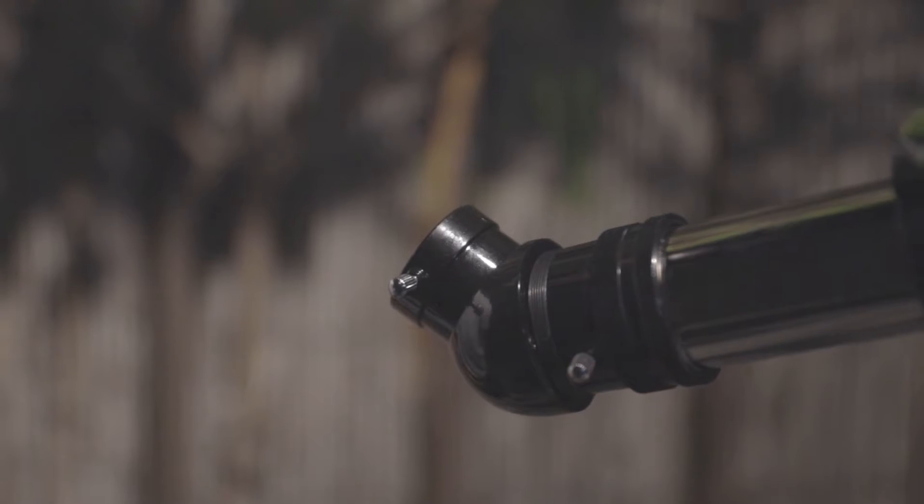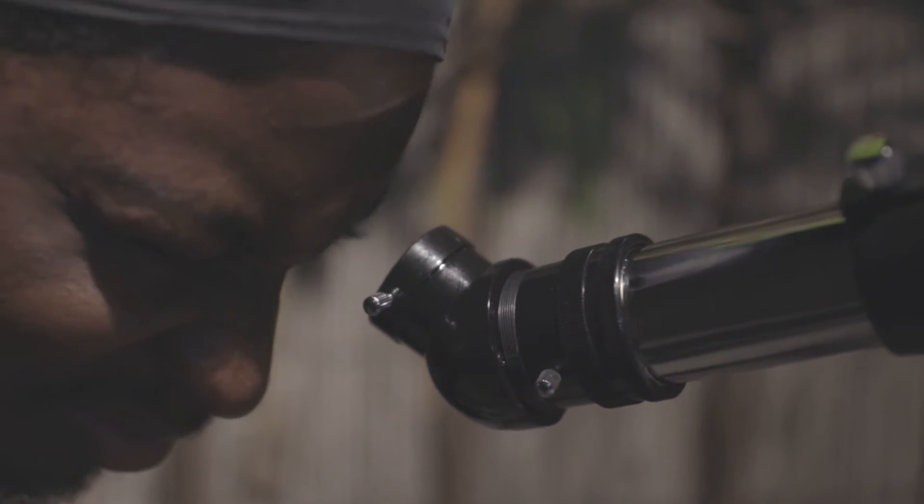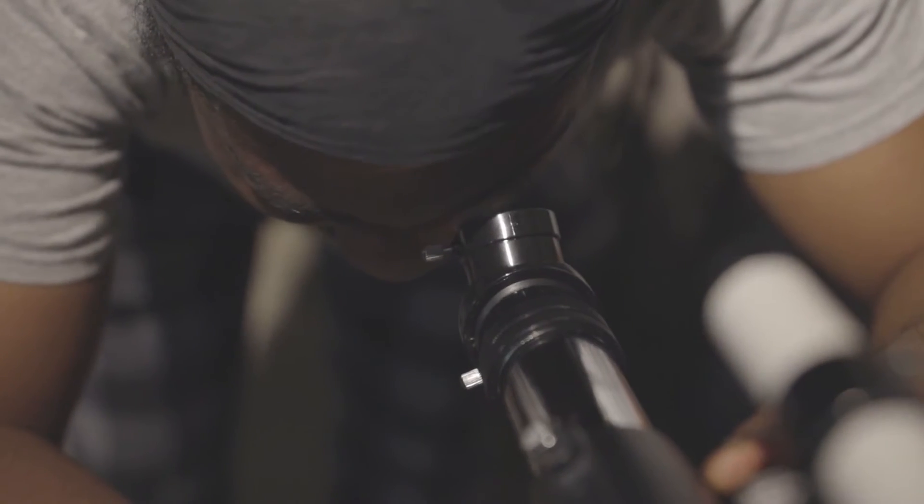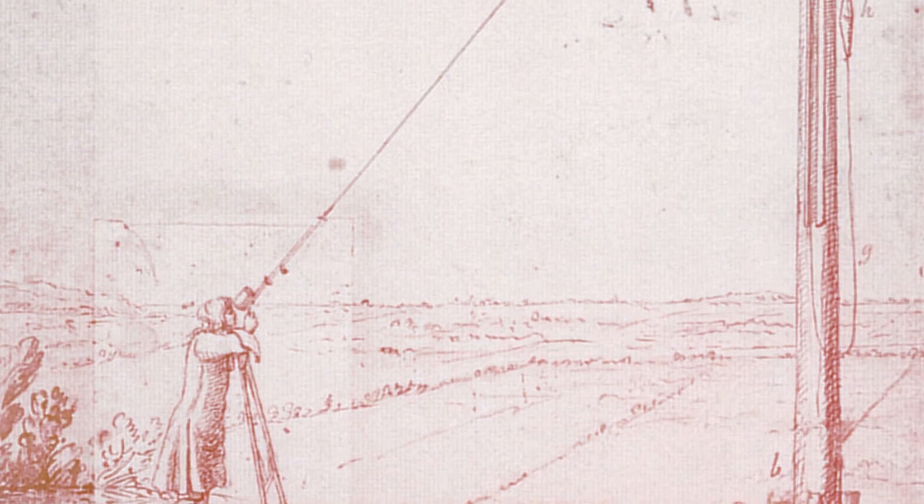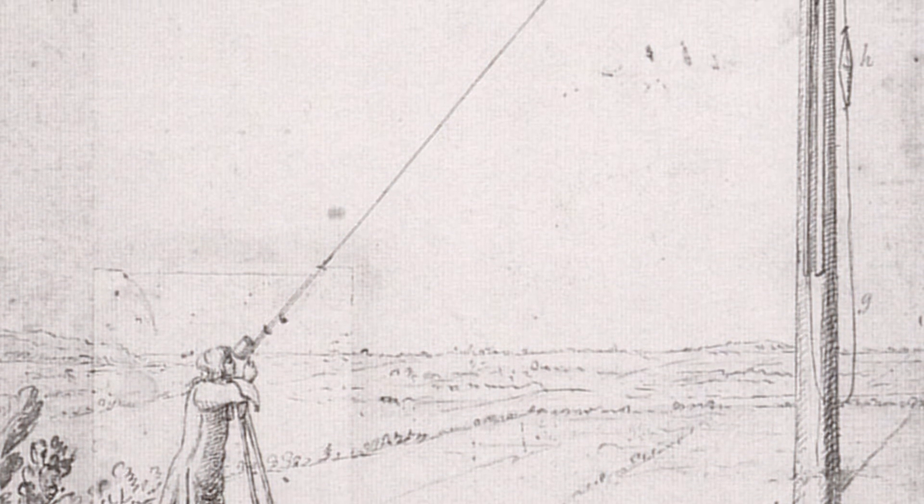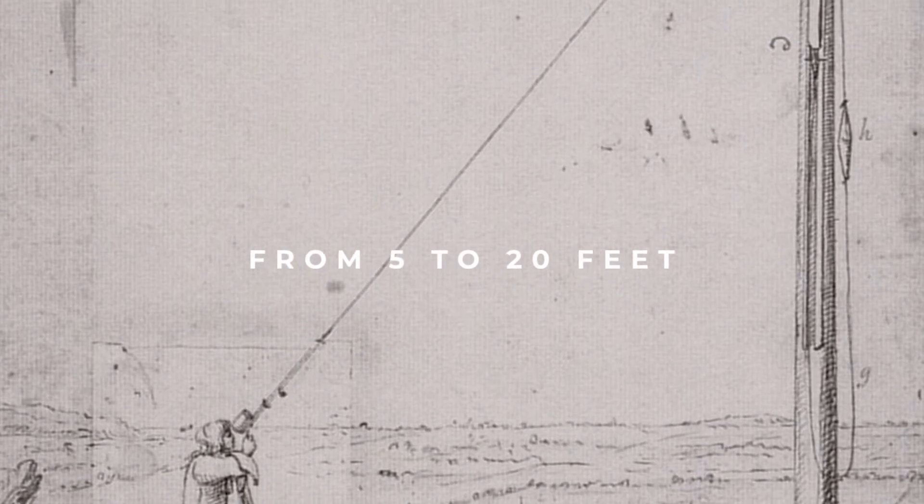Over time, lens grinding and polishing techniques were perfected, and a specialized craft community of telescope makers was formed to produce better quality telescopes. In the middle of the 17th century, telescopes grew in length from 5 to 20 feet.